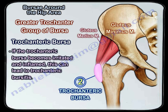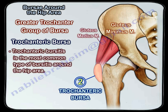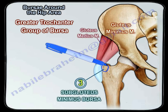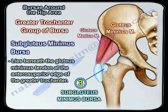If the trochanteric bursa becomes irritated and inflamed, this can lead to trochanteric bursitis, which is the most common bursitis around the hip area. The third type is the subgluteal minimus bursa, which lies beneath the gluteus minimus tendon at the anterior superior edge of the greater trochanter.